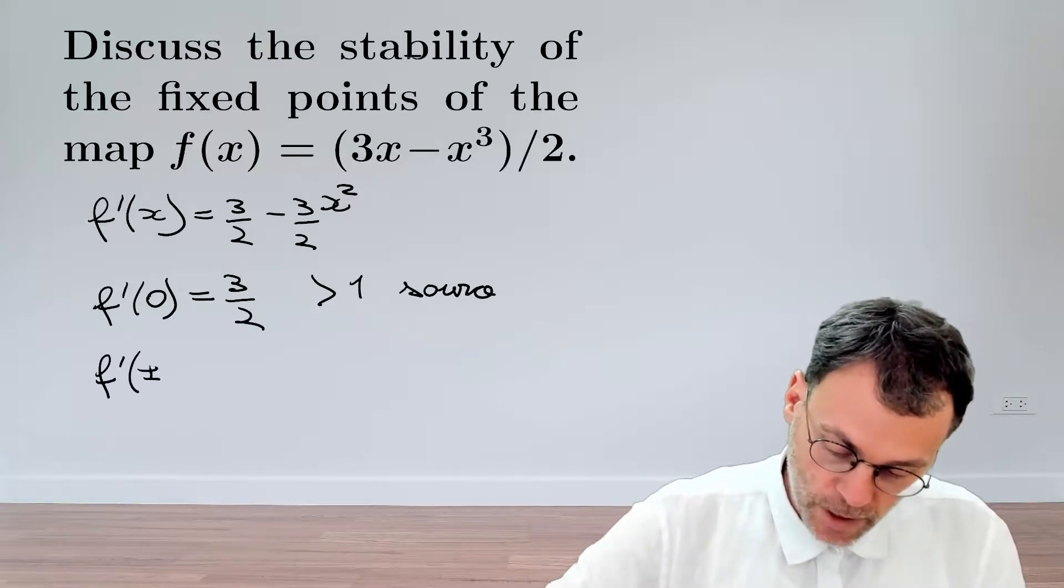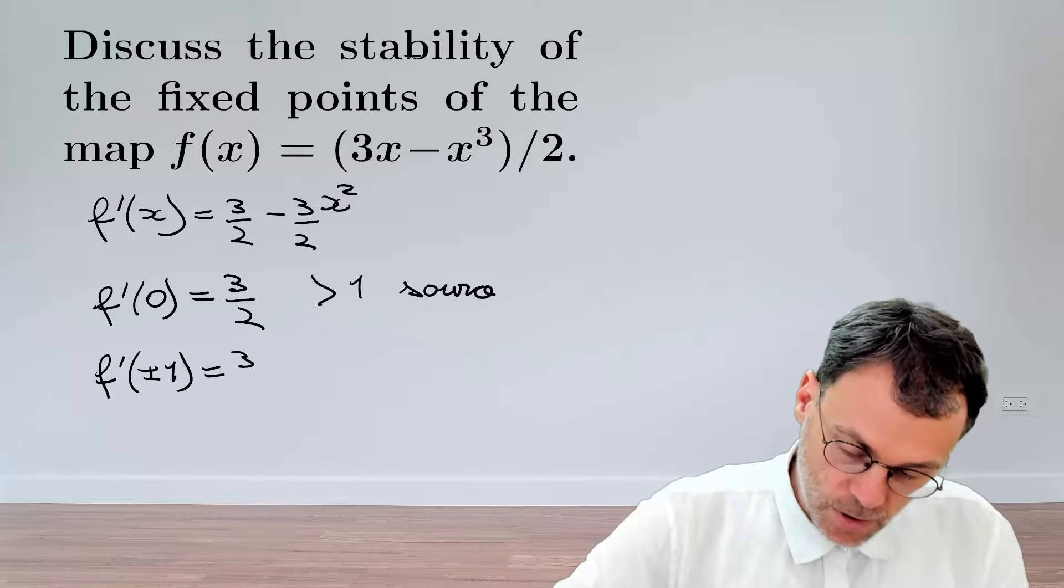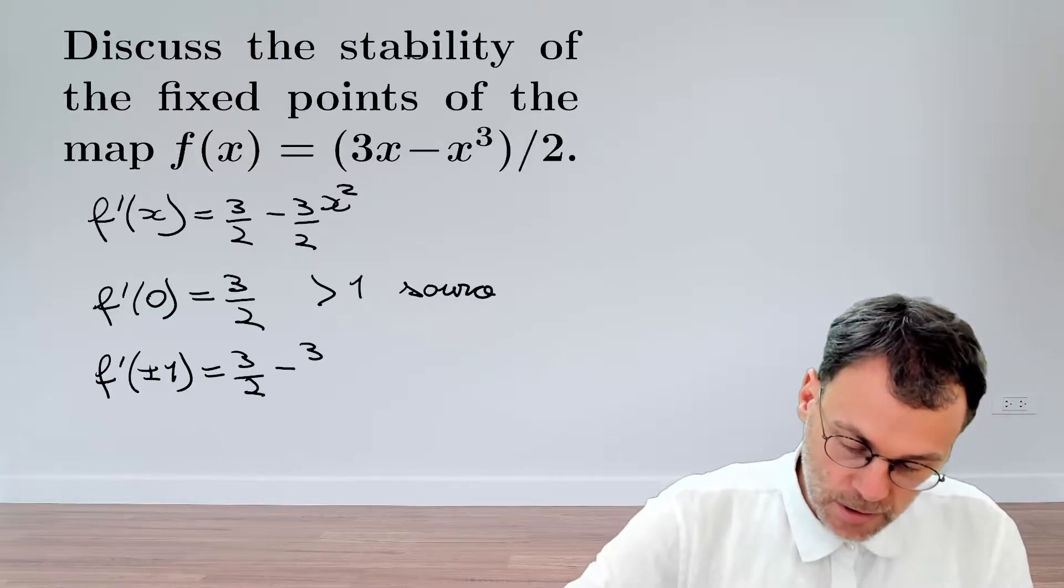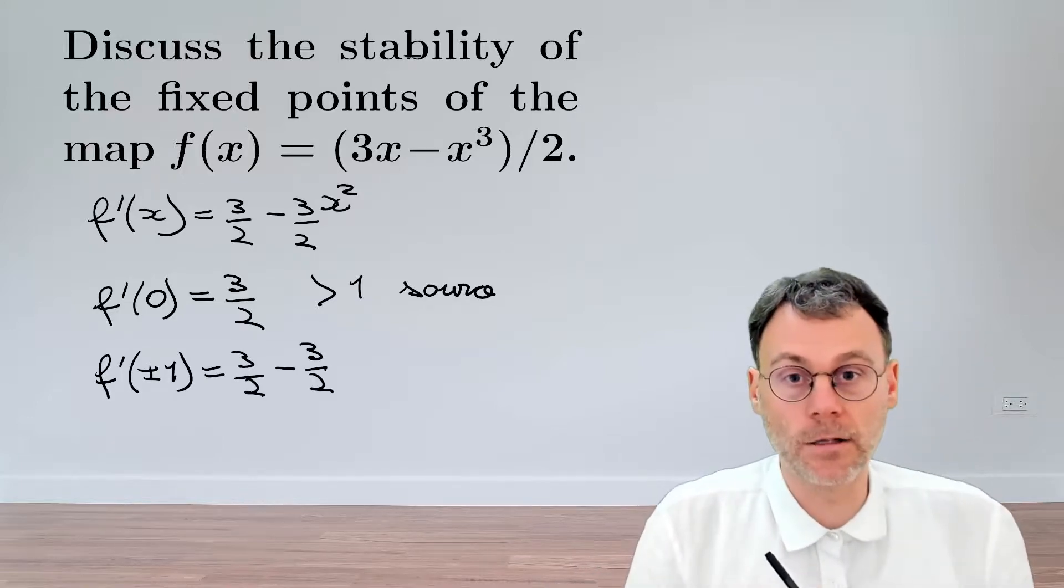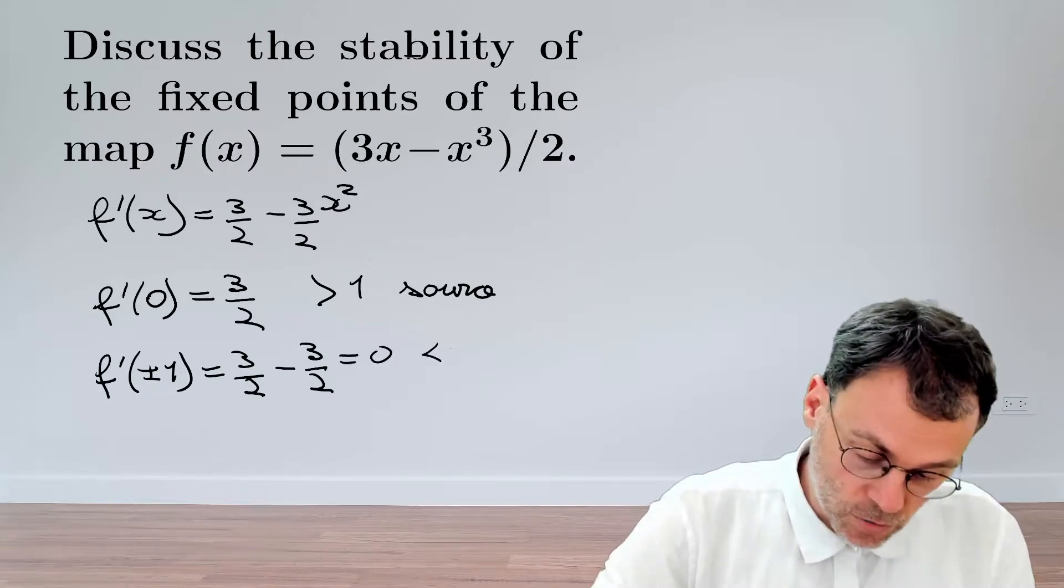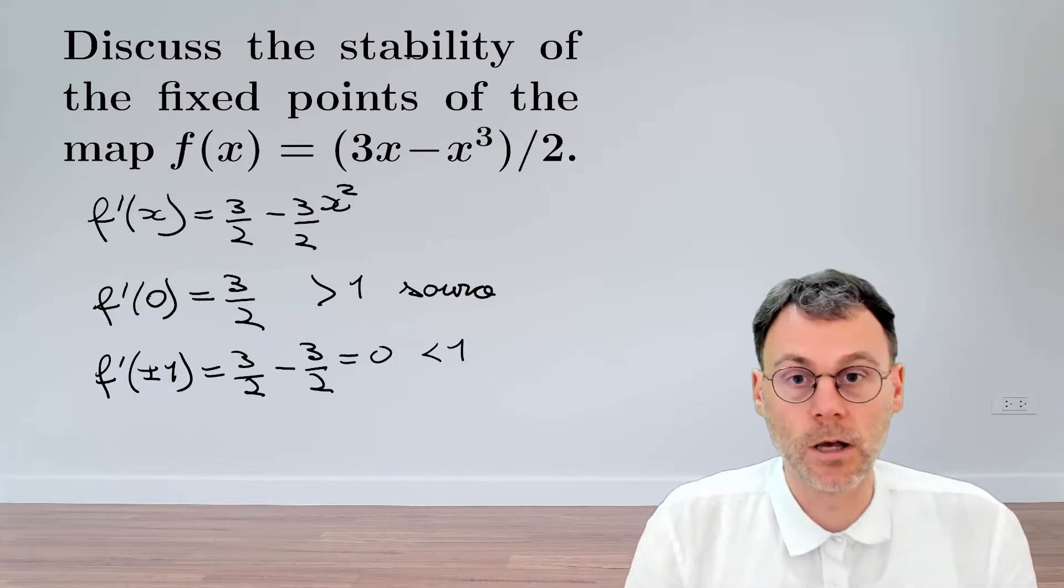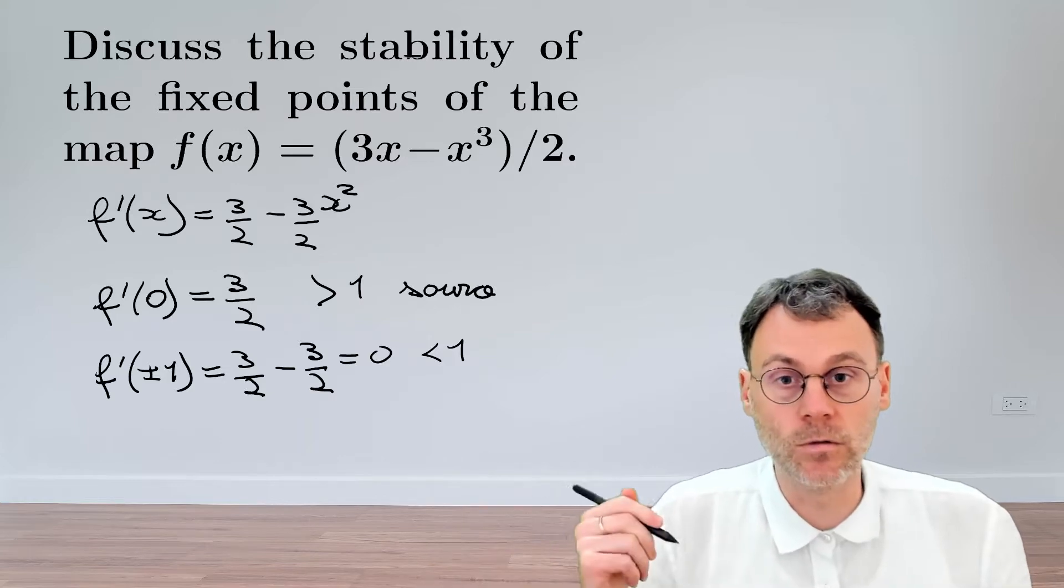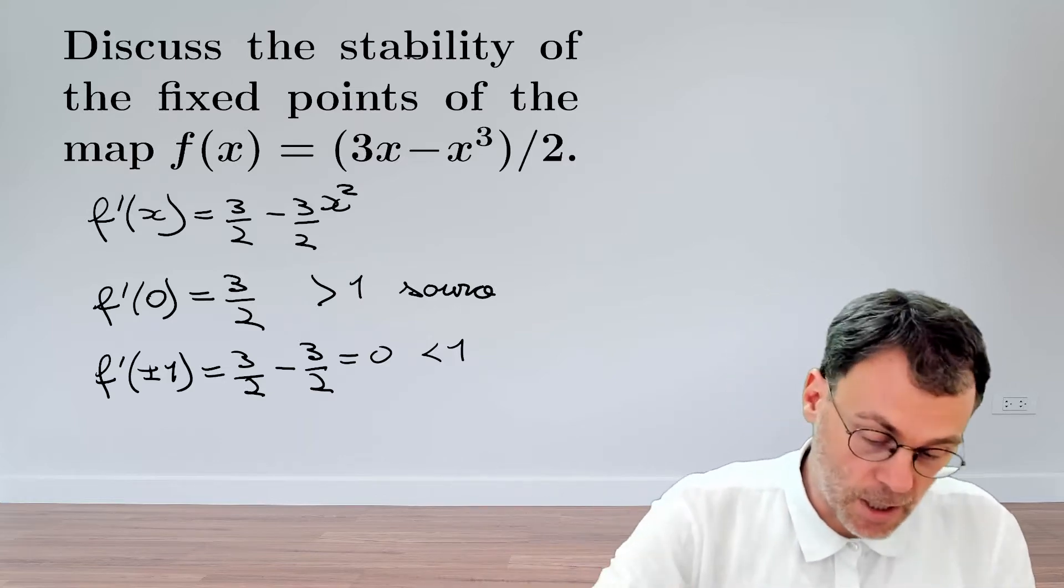On the other hand, if we substitute plus or minus one, they both give the same result because of the square. This is going to be 3/2 - 3/2 = 0, which is in magnitude smaller than one. So these two fixed points are stable - they are sinks.